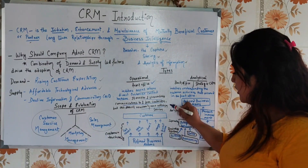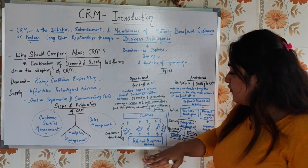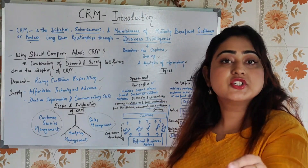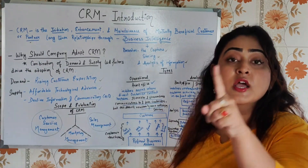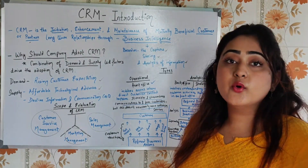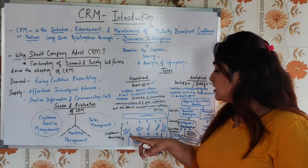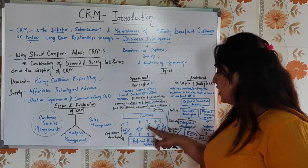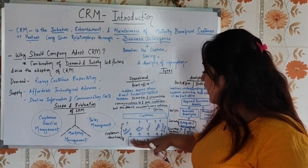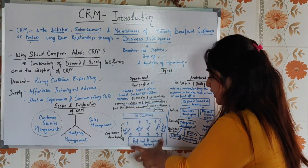Looking at the operational CRM diagram, it starts from refined business actions. The direct interactions that take place between business and customer are called customer touch points, which can be inbound or outbound. These customer touch points include the call center, web access, email, usage, and direct sales. All of these are customer touch points, and at the center is the customer. This is the operational CRM diagram.